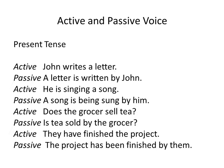Let's see how sentences are changed from active voice to passive voice in the present tense. First example — Active: 'John writes a letter.' Passive: 'A letter is written by John.' Second, in present continuous tense — Active: 'He is singing a song.' Passive: 'A song is being sung by him.' Third — Active: 'Does the grocer sell tea?' Passive: 'Is tea sold by the grocer?' Fourth — Active: 'They have finished the project.' Passive: 'The project has been finished by them.'